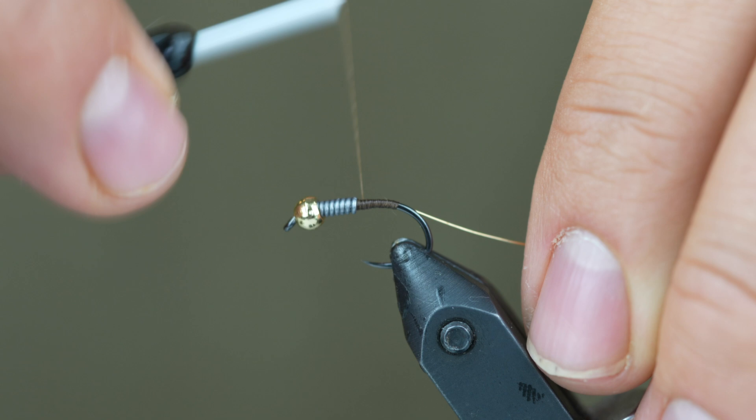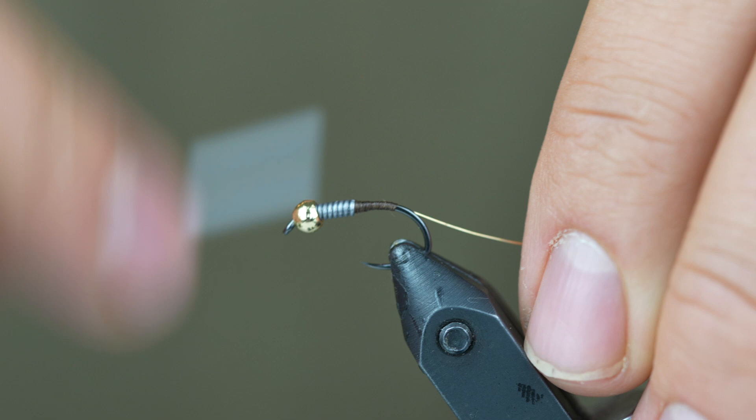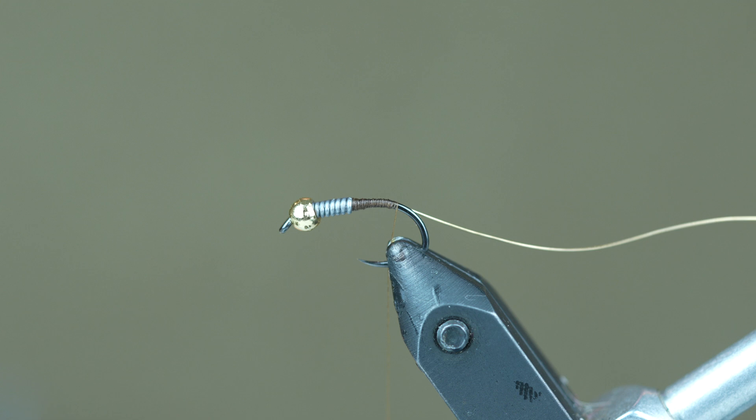You can build up a little bit of a taper here behind the lead wire with your thread. The dubbing will take care of that for the most part so it doesn't have to be perfect. But then we're going to just wrap right back to the back of the fly.